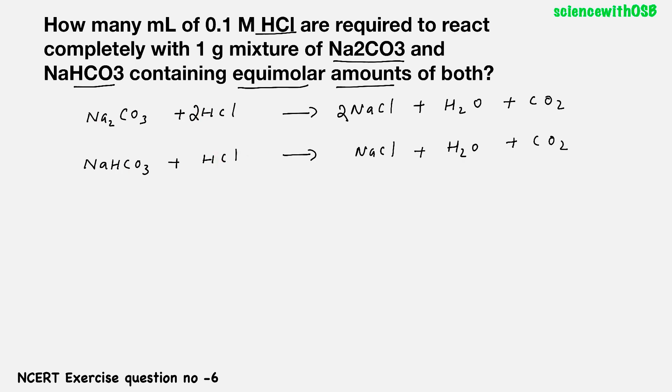As per the question, we are using equimolar amount of both, which means, assume if you are using x mol of Na2CO3, the number of moles of NaHCO3 will also be x. Now, what about HCl? It should be definitely double. For 1, it is 2. So for x, it should be 2x. And here, for 1 NaHCO3, you can see 1 HCl only. So for x, it should be x only.